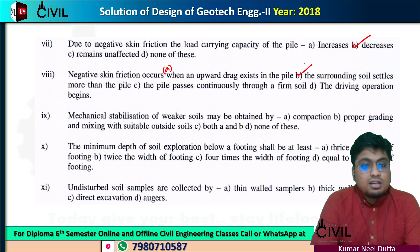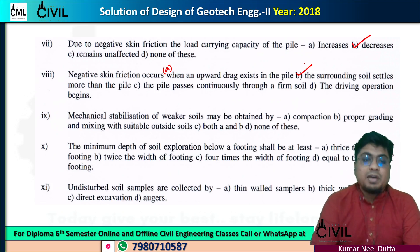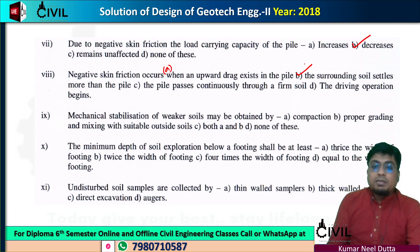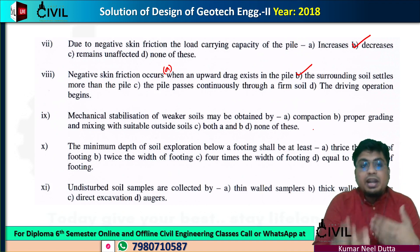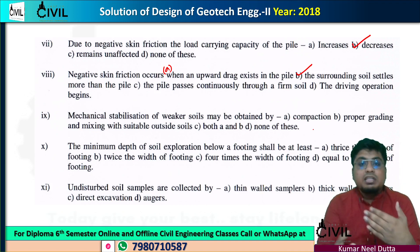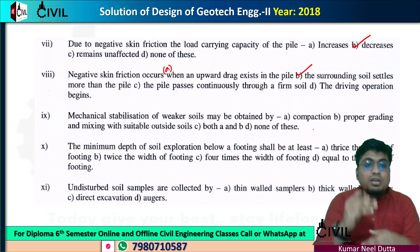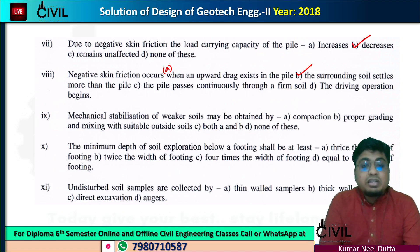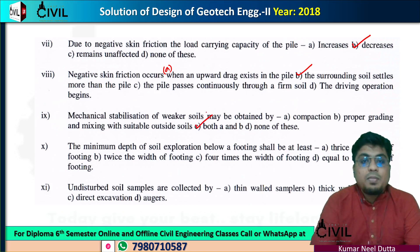Next is number 9: mechanical stabilization of weaker soil may be obtained by what method? We need to do compaction and proper grading. Proper grading means mixing fine grade and coarse grade material. We need to properly compact — this increases dry density. So we need to do both A and B, meaning option C is correct.